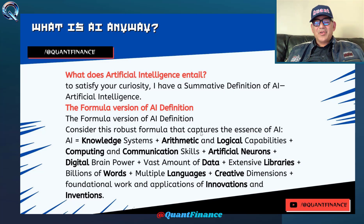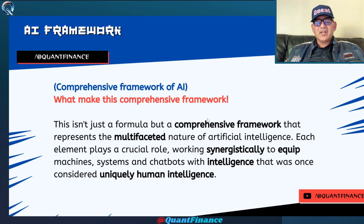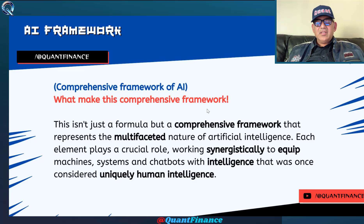From this formula, we will now move to the descriptive understanding of AI and talk about a comprehensive framework of artificial intelligence. This is not just a formula — this summative definition of AI is a comprehensive framework that represents the multifaceted nature of artificial intelligence. Each element included in this definition plays a vital role in equipping these machines, systems, and chatbots with intelligence.